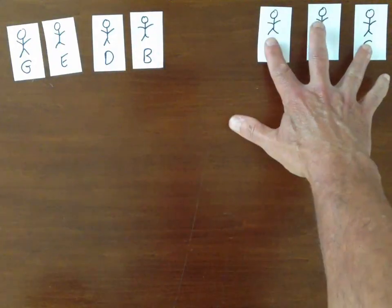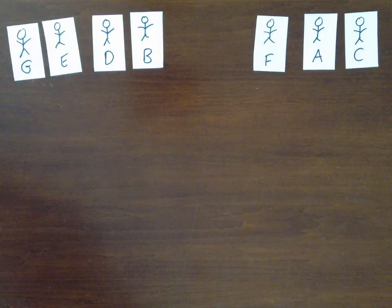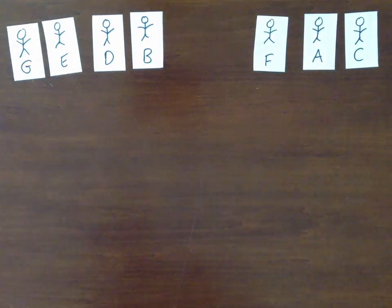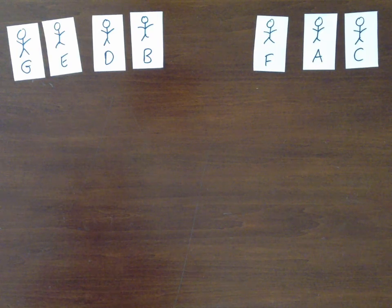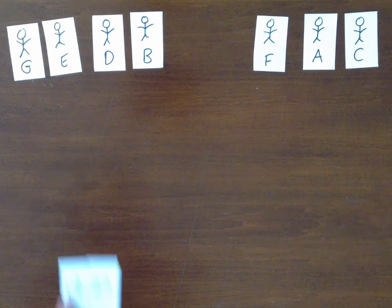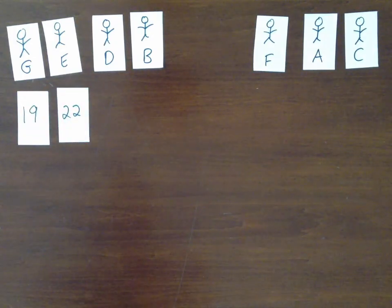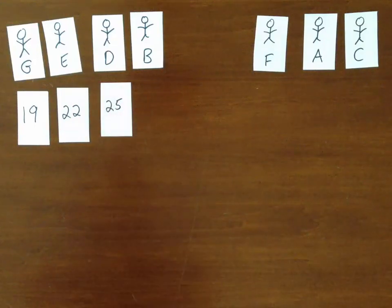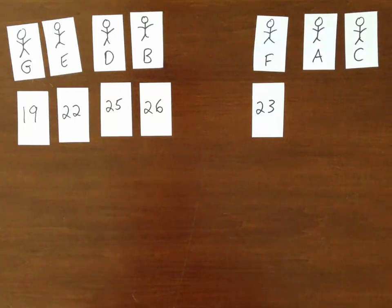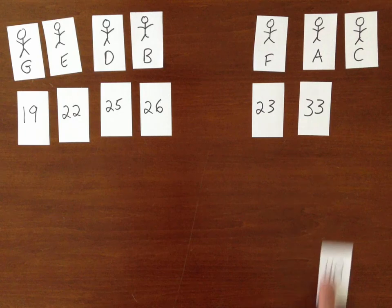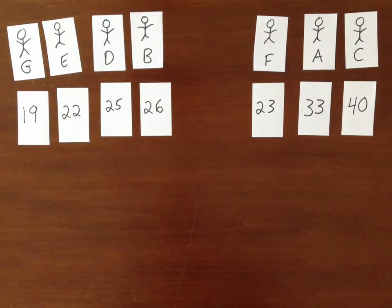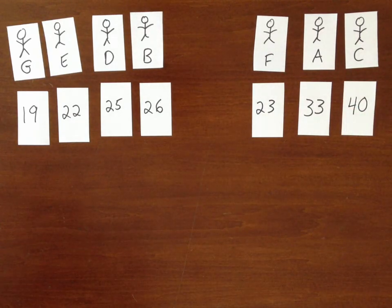Now they have their surgery and we're going to give them their respective care, and we're going to see how long it takes them to recover. The people in the treatment condition: person G takes 19 days, person E takes 22 days, person D 25, and person B 26. In the control, the regular or standard care: person F 23 days, person A 33 days, and person C takes 40 days.